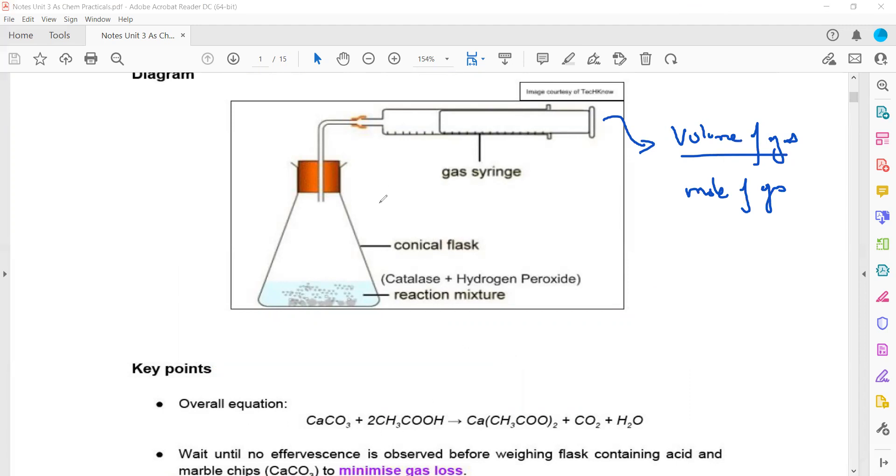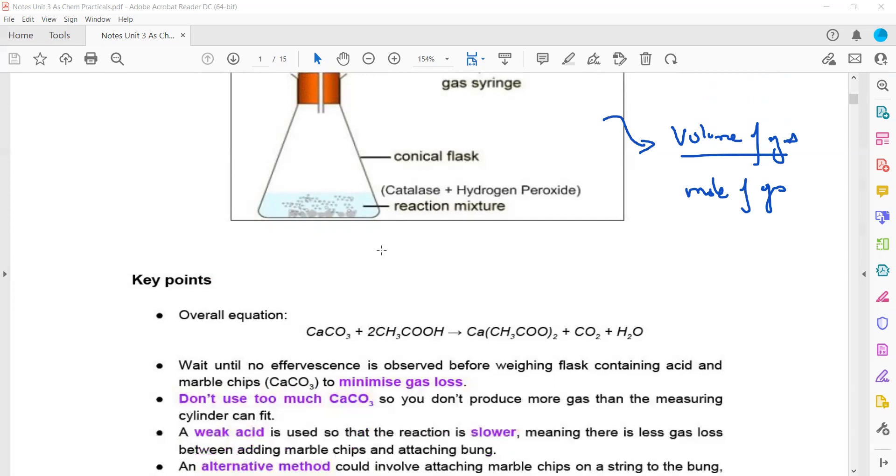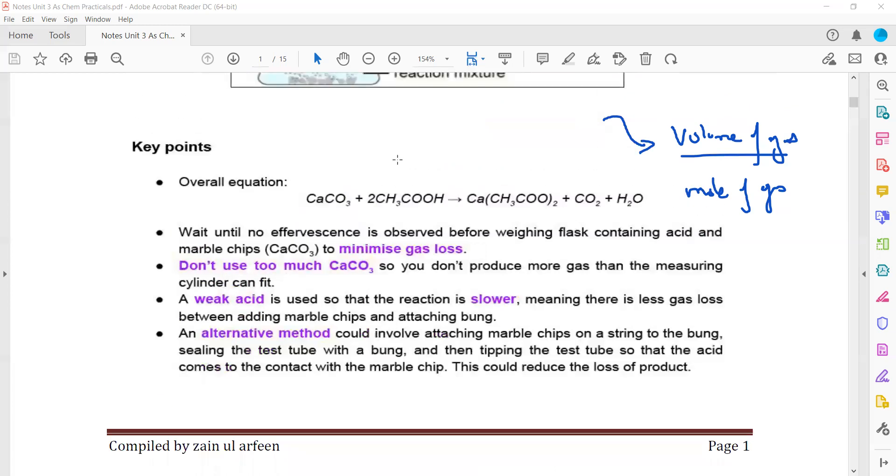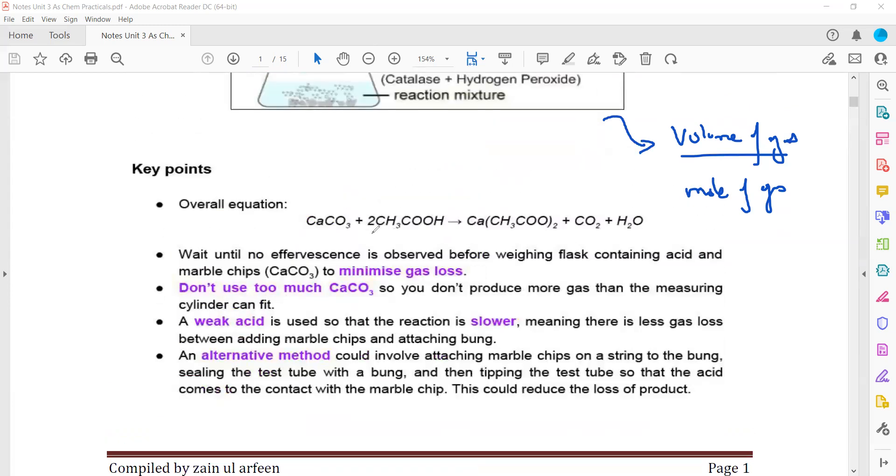For example, if ethanoic acid is the limiting reagent, calculate its moles first. Normally the solid is in excess and the aqueous acid is limiting to ensure all acid has reacted. From the moles of ethanoic acid, we can calculate the moles of carbon dioxide. Then volume divided by moles gives the molar volume.